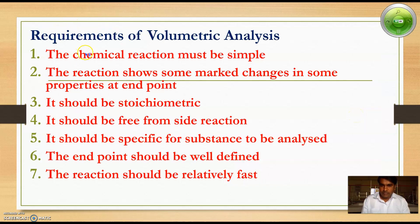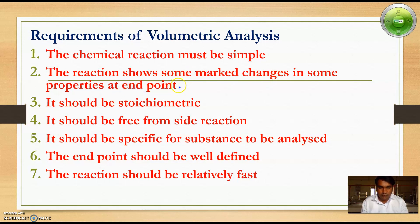Now the requirements of volumetric analysis. These are simple techniques and easy to perform. The chemical reaction must be simple. The reaction must show some marked changes in properties at the end point with the help of an indicator. It should be in stoichiometric amount, that is 1:1. It should be easy to calculate, and it should be free from side reactions.